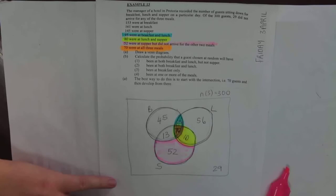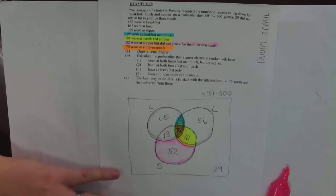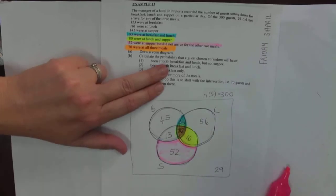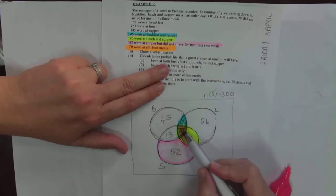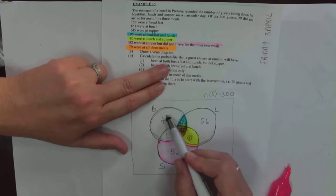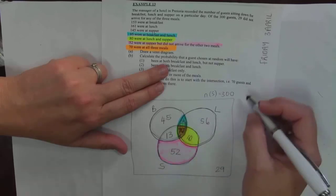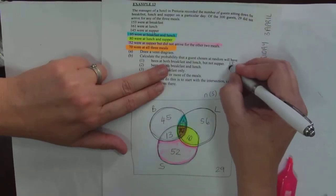Calculate the probability that the guests chosen at random have been at both breakfast and lunch but not supper. Both breakfast and lunch but not supper—remember the intersection is breakfast, lunch, supper. That 45 is breakfast alone, that 56 is lunch alone. Breakfast and lunch is then 25 out of the 300 people, and that's 1 over 12.